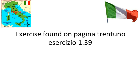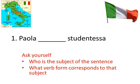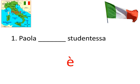The first one says: Paola blank studentessa. So how am I going to figure out which verb to take? Well, first of all you have to ask yourself who's the subject of the sentence. The subject is Paola — that is one girl, a female — therefore what verb corresponds to that subject? Well, Paola is a lei, and so you need the lei form of the verb essere, which in this case is è. Paola è studentessa.